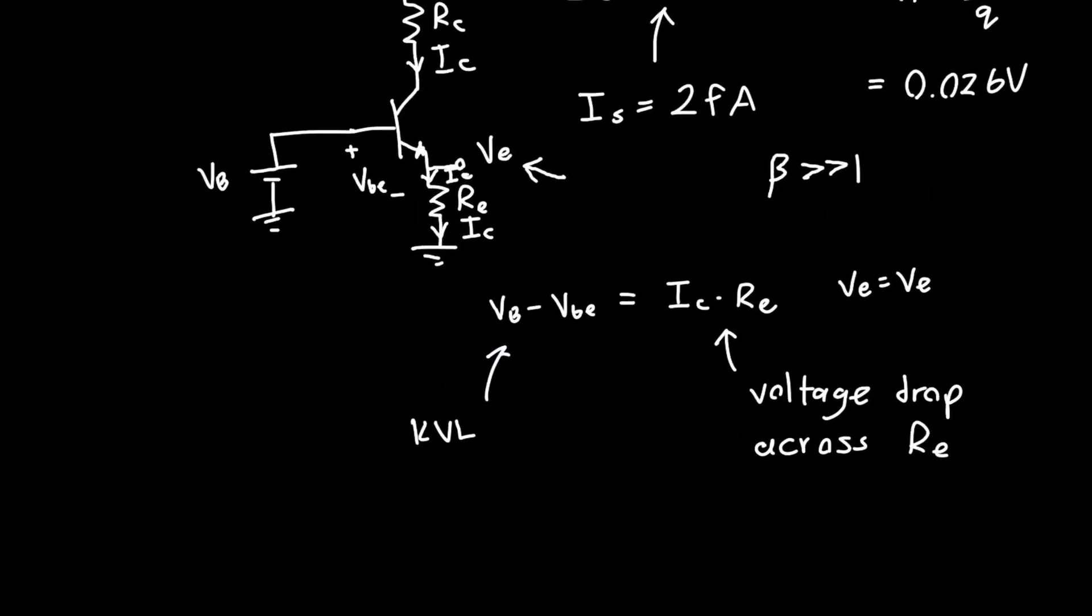We also know we have a relationship for IC as a function of VBE. So if we know that IC is just equal to IS times e to the VBE over phi T, then we can just rewrite this equation as VB minus VBE equals IS times e to the VBE over phi T times RE.